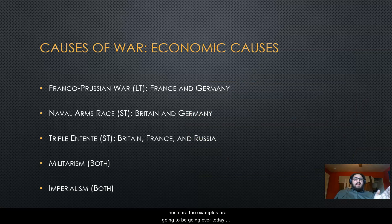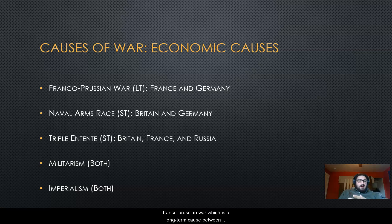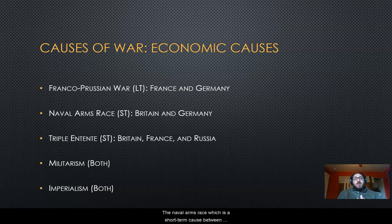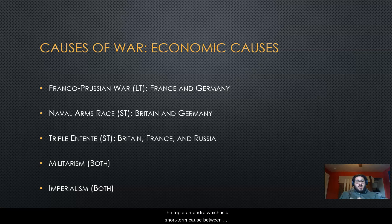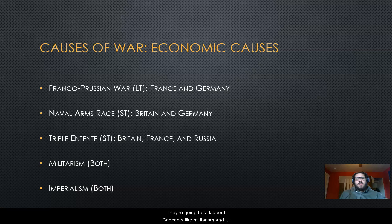Here are the examples we're going to go over in this video. We're going to talk about the Franco-Prussian War, which is a long-term cause between France and Germany. The Naval Arms Race, which is a short-term cause between Britain and Germany. The Triple Entente, which is a short-term cause between Britain, France, and Russia. And then concepts like militarism and imperialism, which are both long-term and short-term causes.